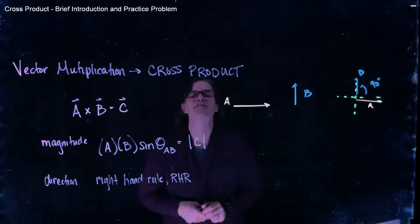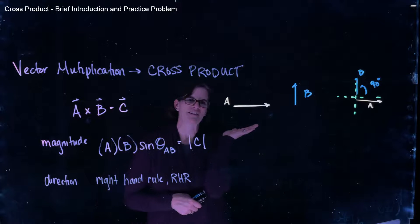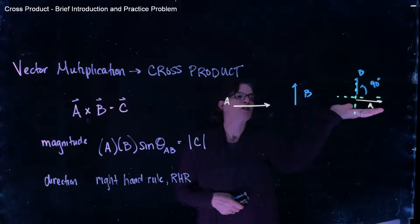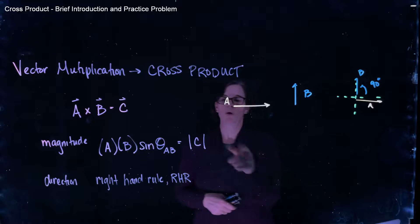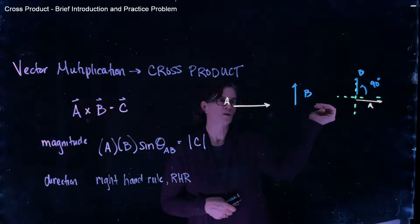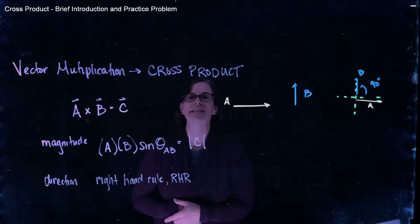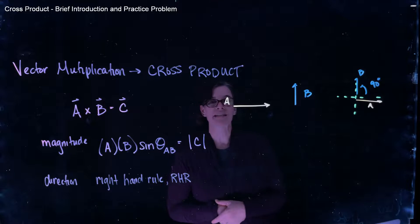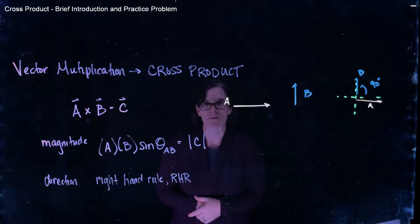That's method two. The final method is that we put our fingers in the direction of A. We curl our fingers towards B. So we start with A. We curl our fingers towards B. Our thumb then points in the direction of C. So when our thumb points in the direction of C, again, that's pointing towards me, just like the other two methods.